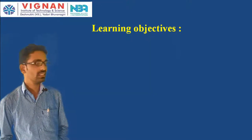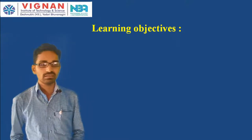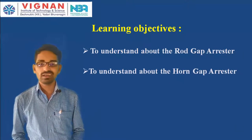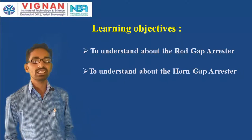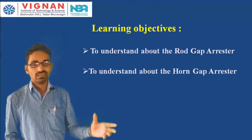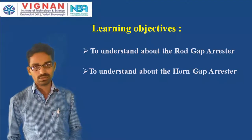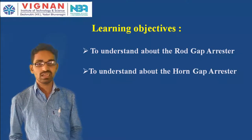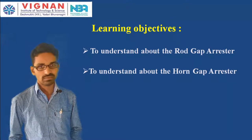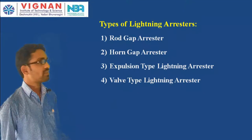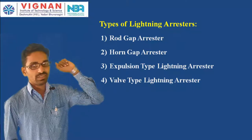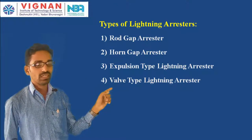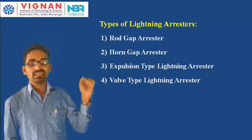The learning objectives of this lecture: first is to understand about the rod gap arrestor, and second is to understand about the horn gap arrestor — how the rod gap arrestor diverts or arrests the surge due to lightning strokes, and how the horn gap arrestor works to send the lightning surge to the ground. The types of lightning arrestors are: rod gap arrestor, horn gap arrestor, expulsion type, and valve type. First we will see the rod gap arrestor.